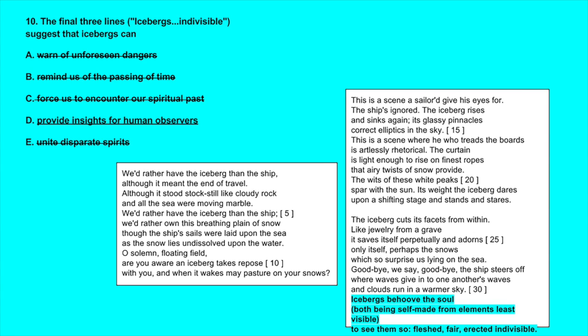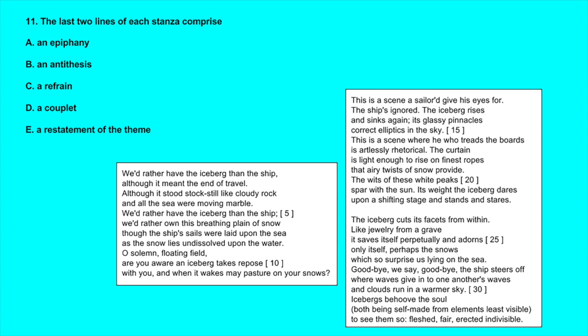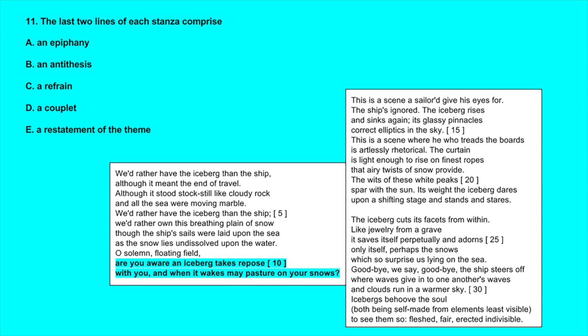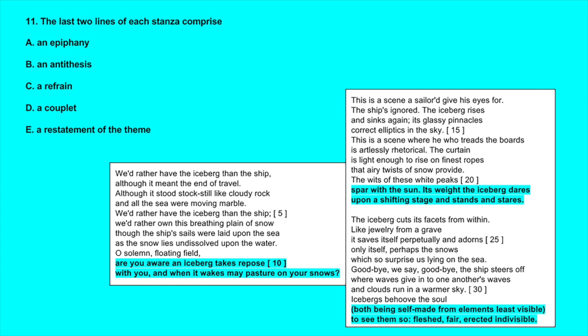Question number 11: The last two lines of each stanza comprise what? Let's look at these three sets of lines. We have: are you aware an iceberg takes repose with you and when it wakes may pasture on your snows. And then: spar with the sun, its weight the iceberg dares upon a shifting stage and stands and stares. And the last ones: both being self-made from elements least visible to see them so fleshed, fair, erected, indivisible.